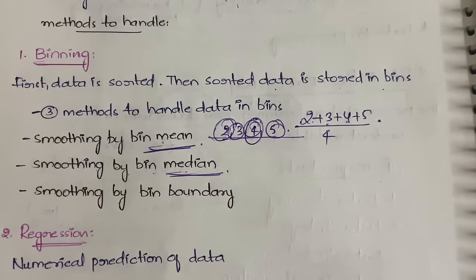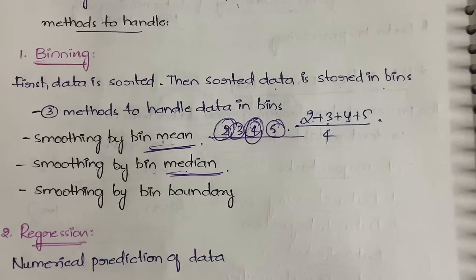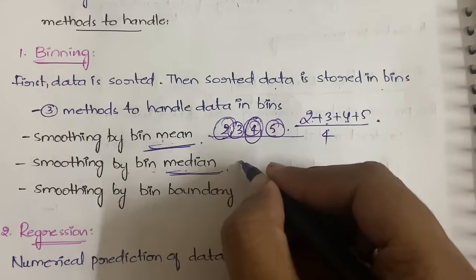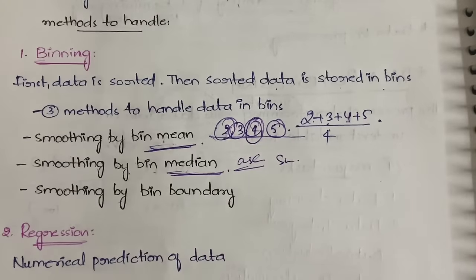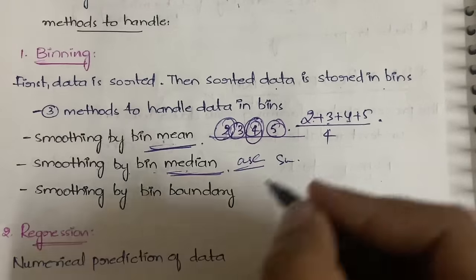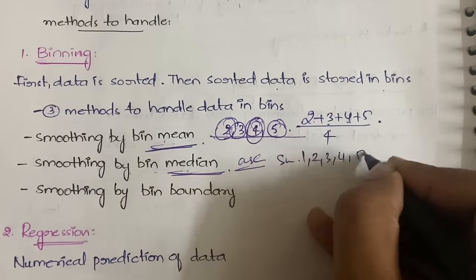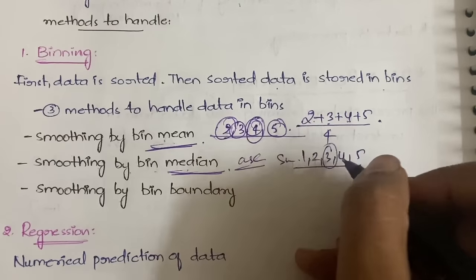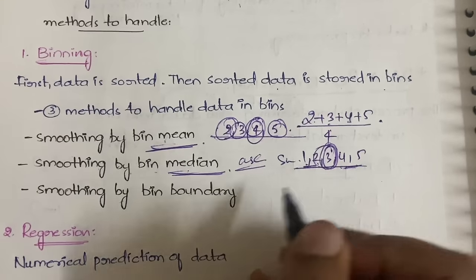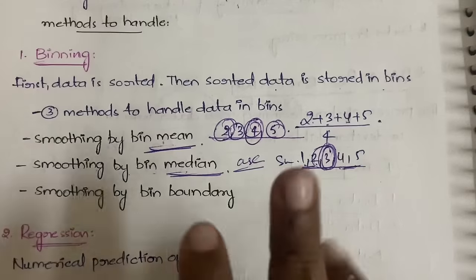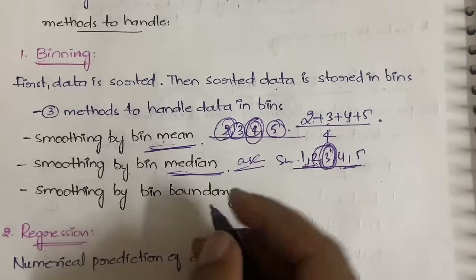The median is the middle value when data is arranged in ascending or descending order. For example, in 1, 2, 3, 4, 5, the median is 3 because it sits in the middle. In smoothing by bin boundary, values are replaced with the minimum and maximum boundary values of the bin.